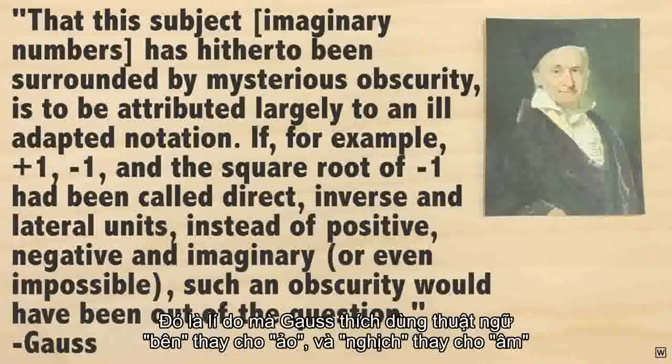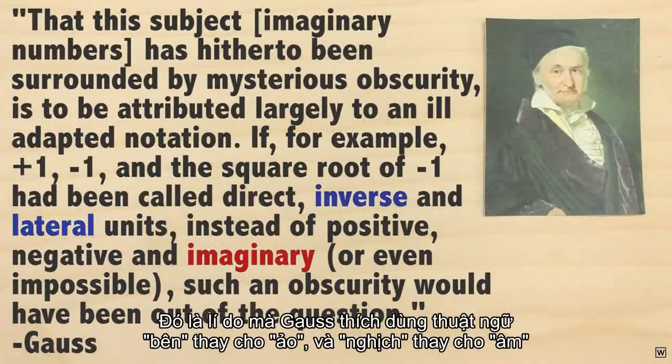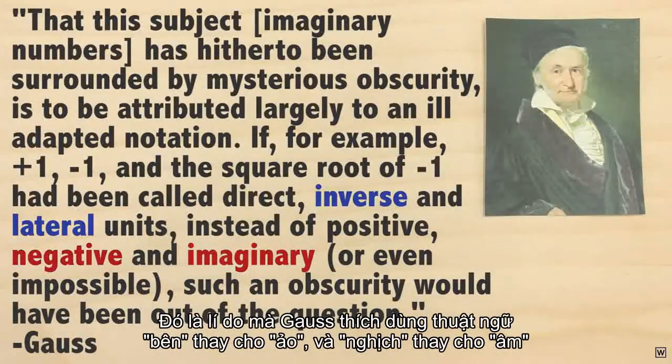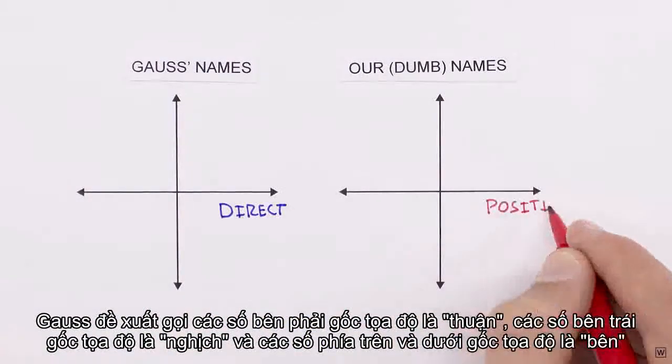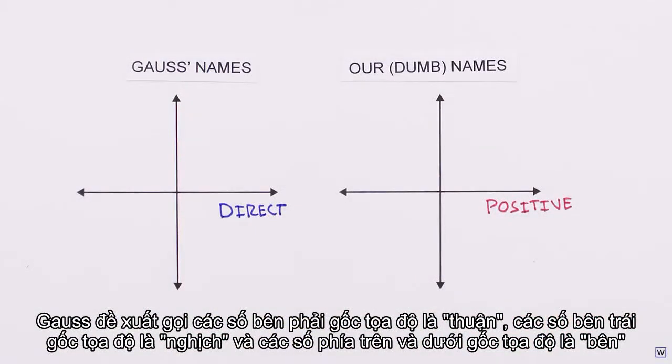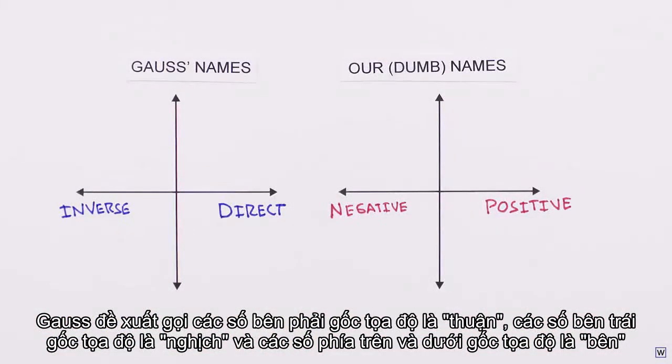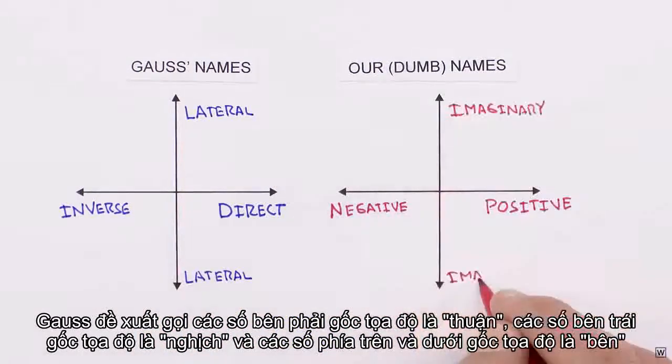This arrangement is why Gauss preferred the term lateral over imaginary, and inverse instead of negative. Gauss suggested that we should call the numbers to the right of the origin direct, the numbers to the left inverse, and the numbers above and below the origin lateral.